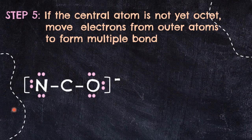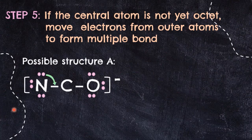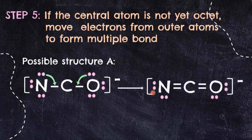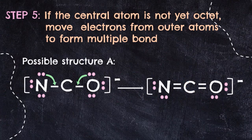For structure A, we take 2 electrons from each of nitrogen and oxygen to form double bonds between carbon–nitrogen and carbon–oxygen. Checking carbon's octet: we have 2, 4, 6, and 8 electrons surrounding it — octet achieved. Carbon is in group 14, so it contributes 1 electron per bond — 1, 2, 3, 4.